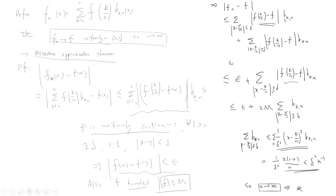The first term, summing over k where |x - k/n| < δ, can be bounded by ε, since we pull out ε and the remaining sum of b_{k,n} terms is at most 1. For the second term, summing over k where |x - k/n| ≥ δ, f is bounded by 2M, so this term becomes 2M times the sum of b_{k,n} over those k.